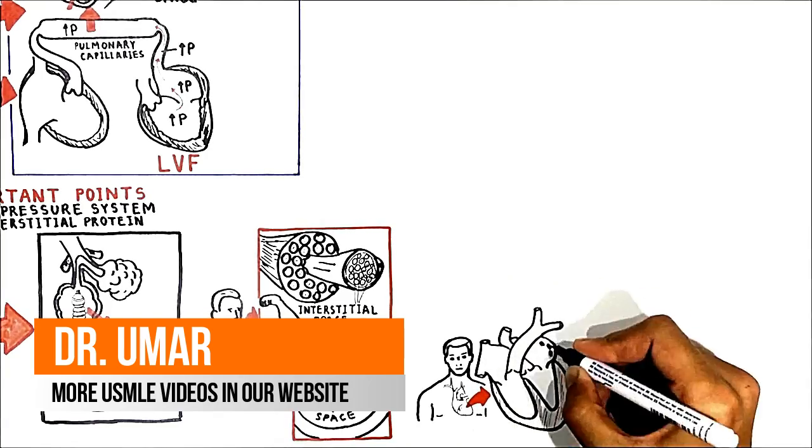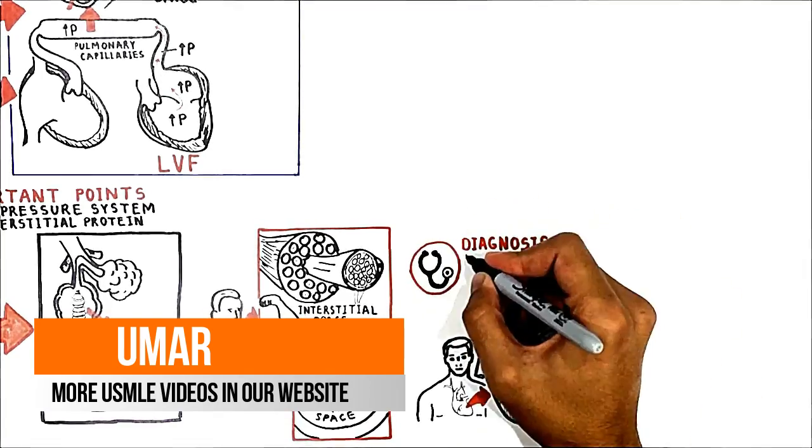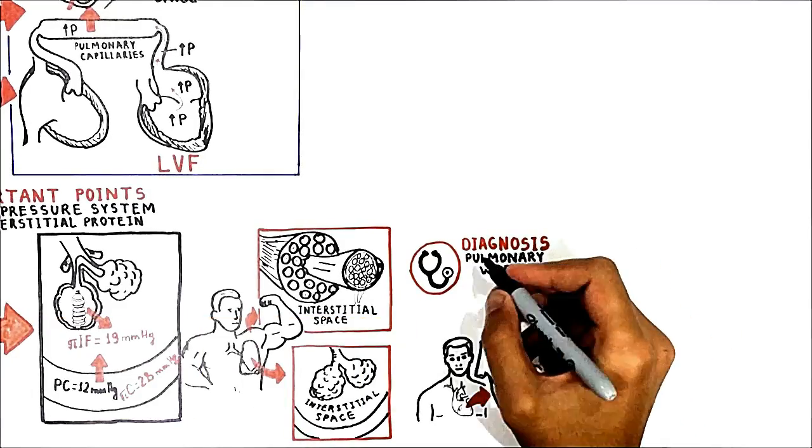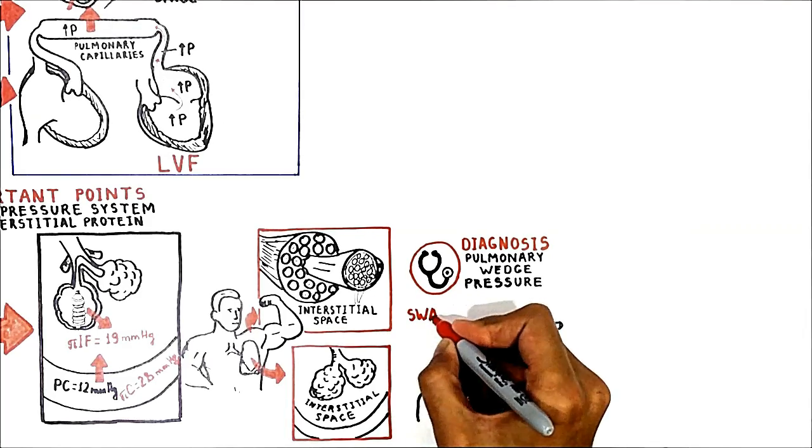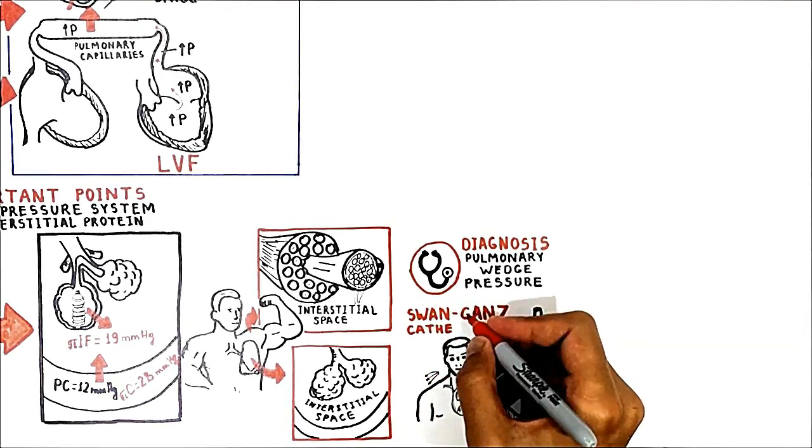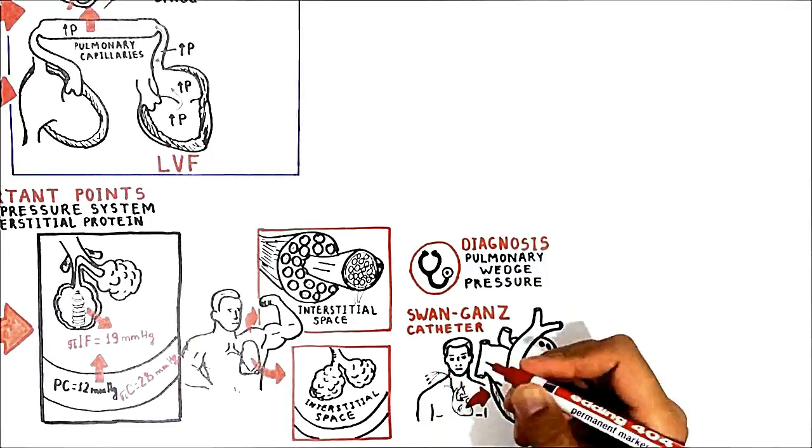Clinically, to confirm high pressure in the pulmonary arteries, we will measure pulmonary wedge pressure. This pressure is measured by inserting a Swan-Ganz catheter into a peripheral vein, such as the jugular or femoral vein.